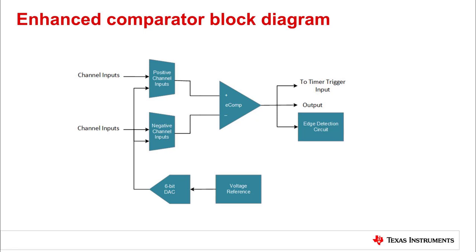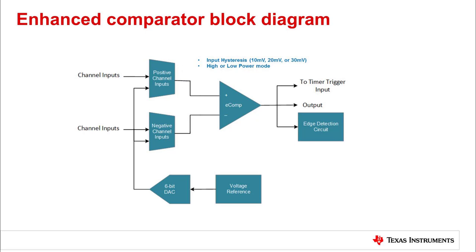The integrated enhanced comparator has configurable input channels on the positive and negative terminals. Both terminals support external inputs and internal inputs from the smart analog combo peripheral and 6-bit DAC. Programmable hysteresis settings are also implemented: 10 millivolt, 20 millivolt, and 30 millivolt hysteresis settings are supported.